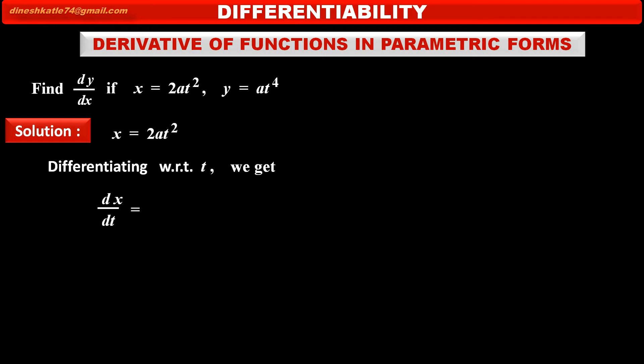On the left-hand side, the derivative of x with respect to t, dx/dt, equals, on the right-hand side, the constant 2a times the derivative of t², which is 2t, giving us 4at.